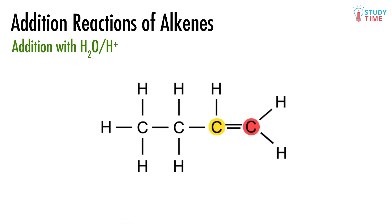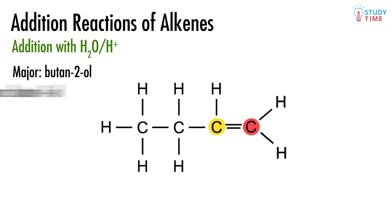So let's look at the original alkene that we had. The carbon in yellow only has one hydrogen on it, whereas the one in red is lucky enough to have a grand total of 2 hydrogens. The rich carbon, the one that will get the extra hydrogen most of the time, must be the end carbon in red. This means that the major product will be the second product we saw, which was butan-2-ol, and the minor product will be butan-1-ol.